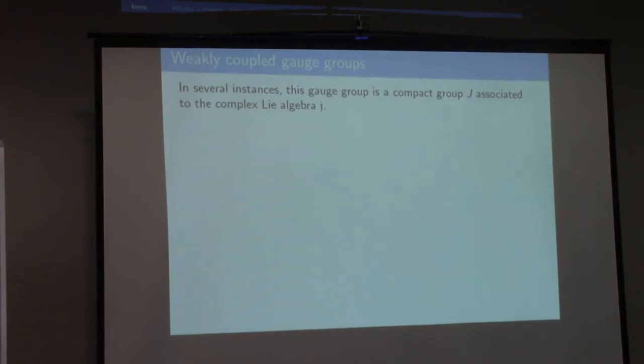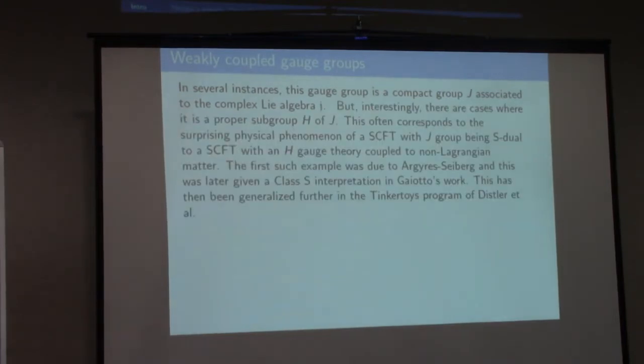In the best circumstances, the group that you divide by is just J itself, or the adjoint group corresponding to the algebra J. However, there are cases where what you get is a proper subgroup H of J. This often corresponds to somewhat surprising physical phenomena: you can have a superconformal field theory with group J which is S-dual to a superconformal field theory with a smaller gauge group but coupled to non-Lagrangian matter. This is where the non-Lagrangian stuff comes in.